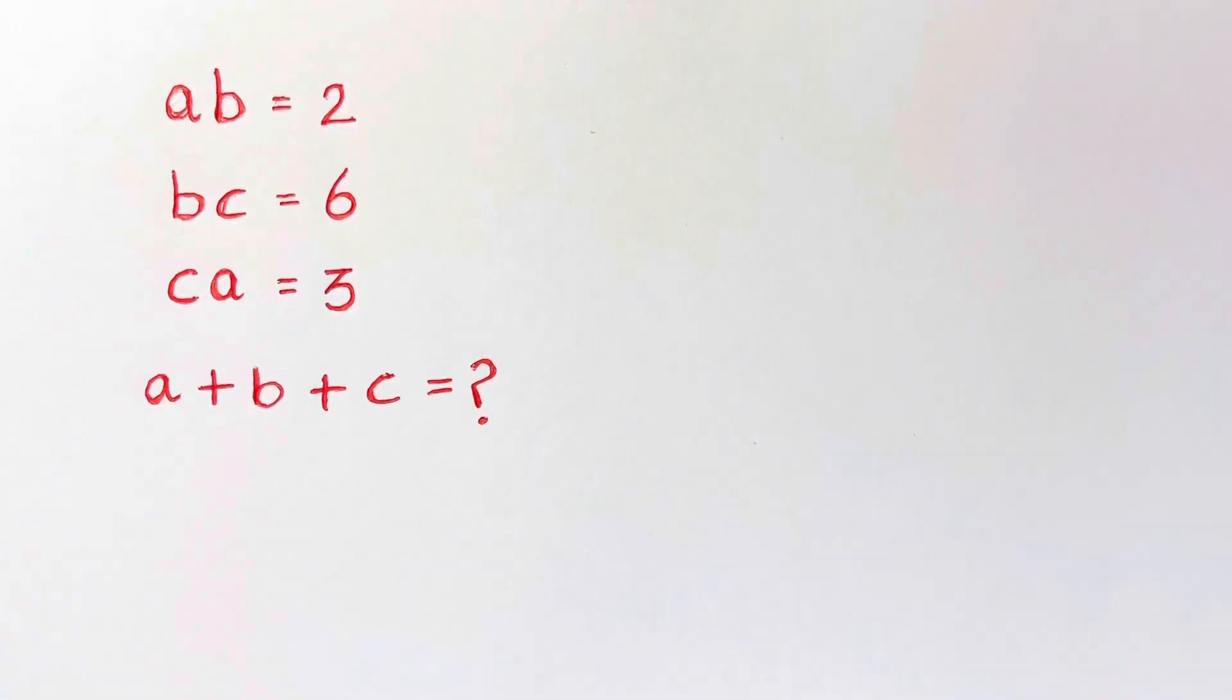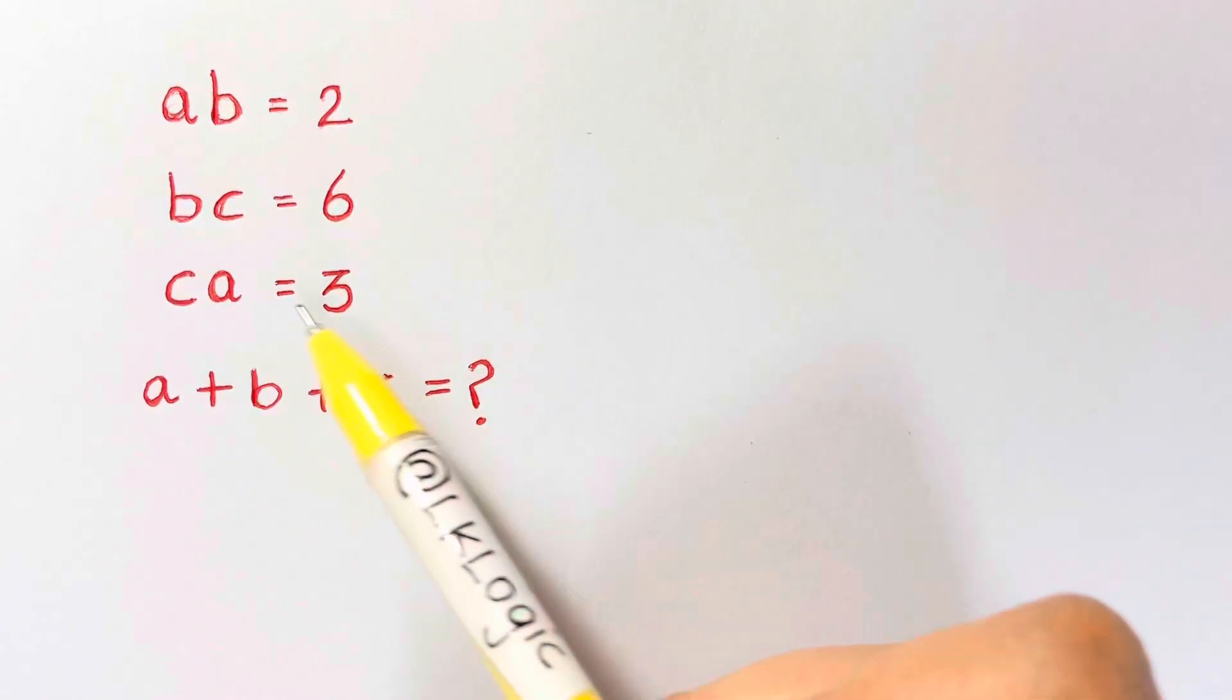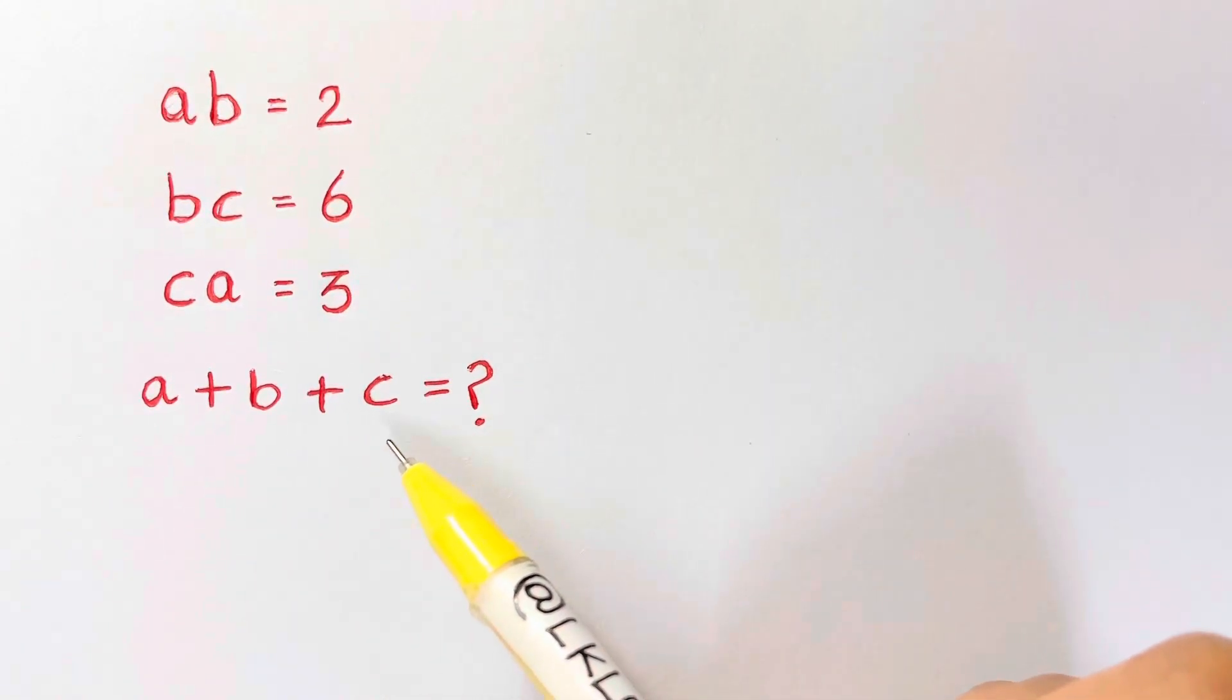Hi guys, have a very nice algebra problem for you all, which says AB equals 2, BC equals 6, CA equals 3. So what does A plus B plus C?